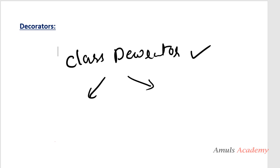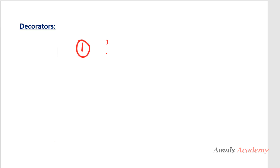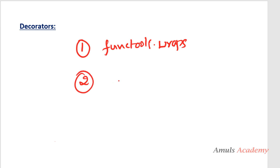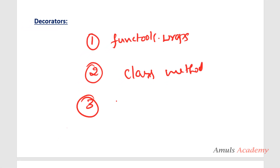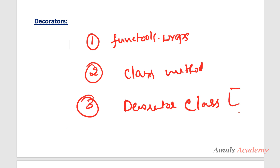So that's all about decorators — I tried to cover all the concepts, though I may have missed a few. In this tutorial we learnt: first, how to use functools.wraps to get the hidden data of the original function; next, how to use a decorator function on a class method; and finally, how to define a decorator class and apply it on a function. That's it for now, guys. Thank you for watching, don't forget to subscribe to my channel — see you in the next class, take care.